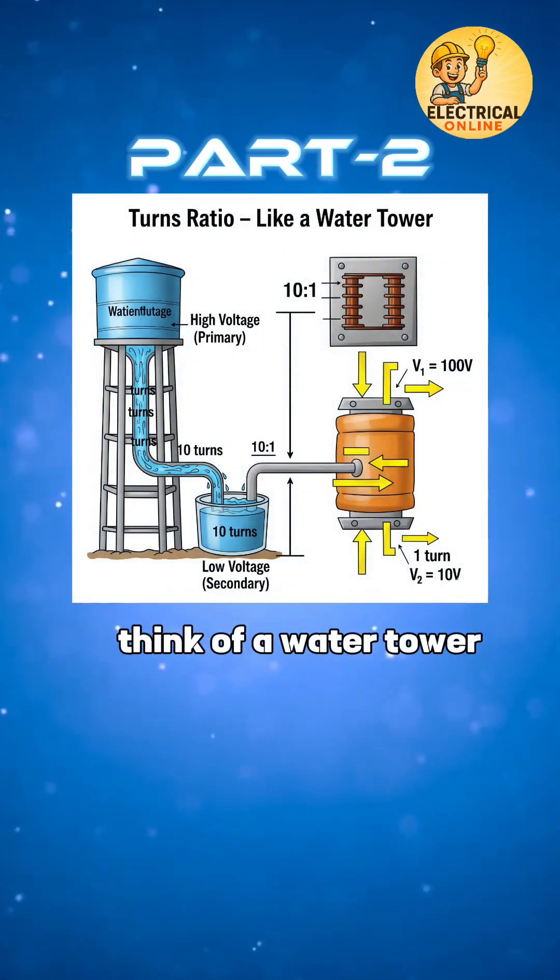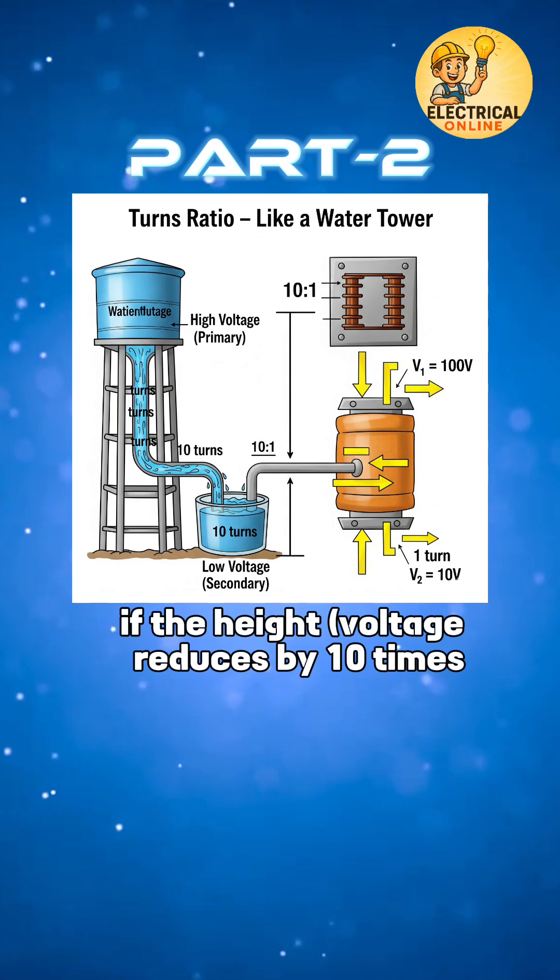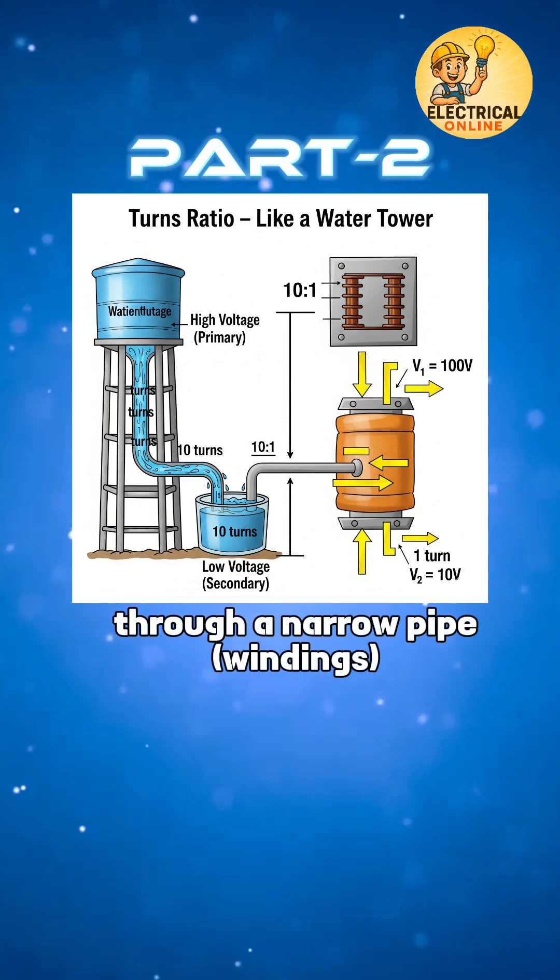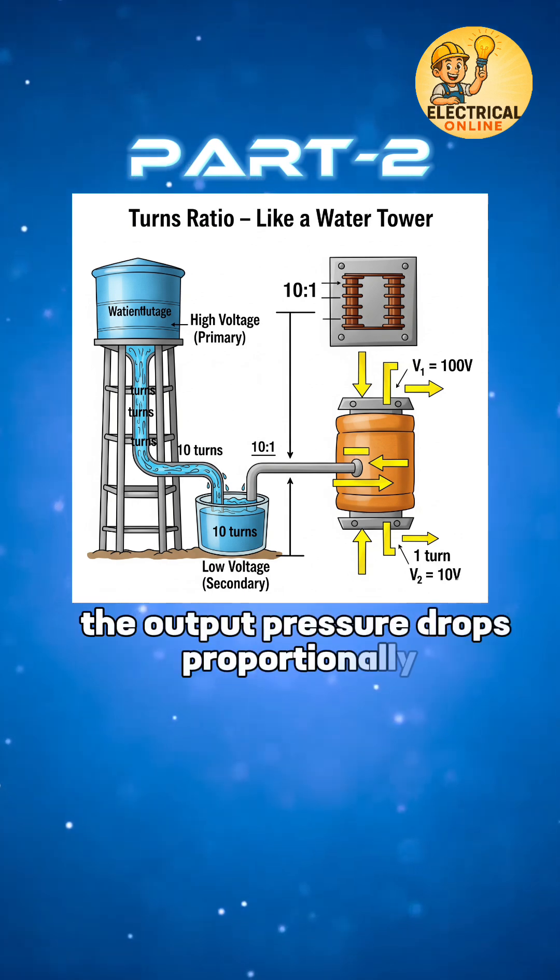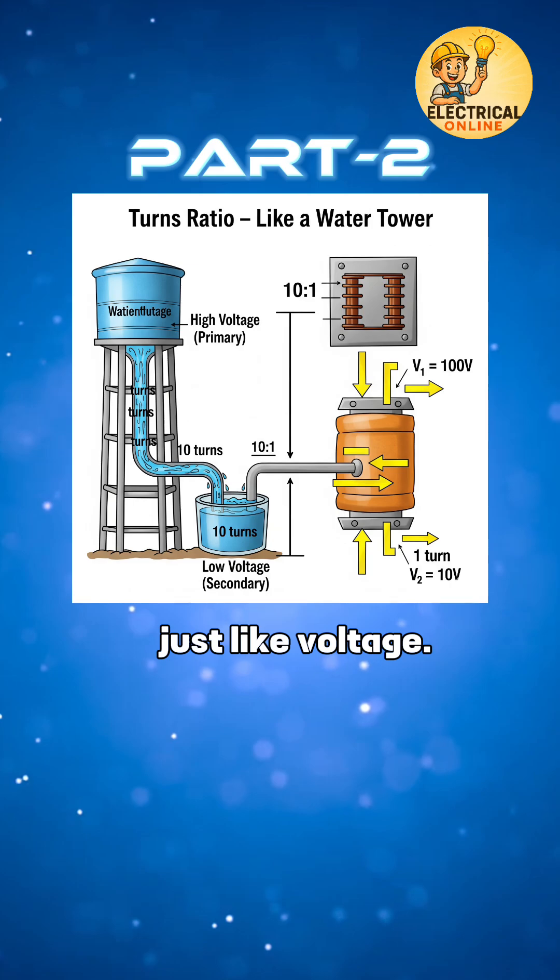Think of a water tower: if the height (voltage) reduces by 10 times through a narrow pipe (windings), the output pressure drops proportionally, just like voltage.